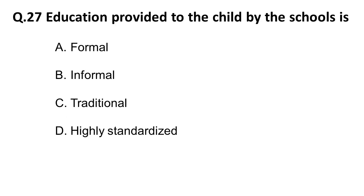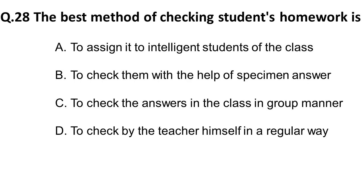The twenty-seventh question: the education provided to the child by the school is what type? School education is formal education, so it comes under formal education. Read about formal, informal, and non-formal education — a question like this comes every time in the examination.